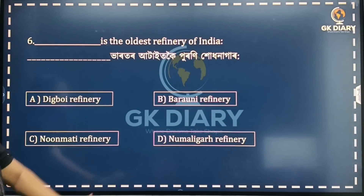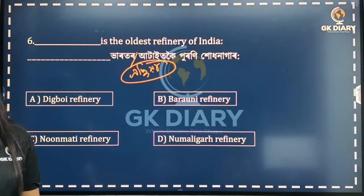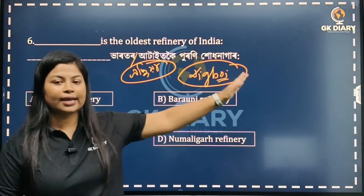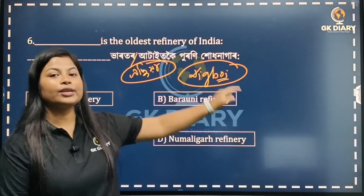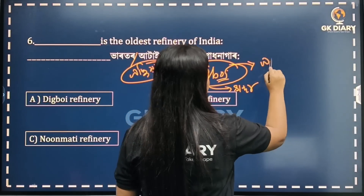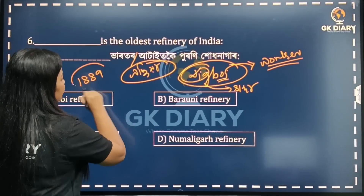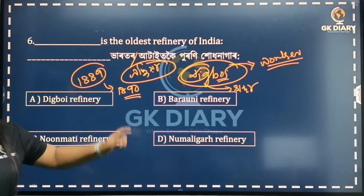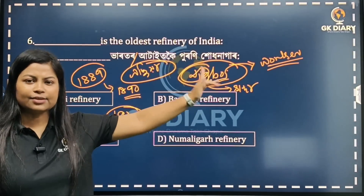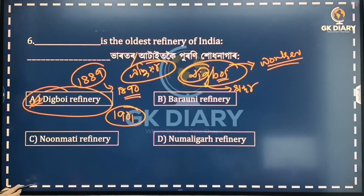Next question: The oil refinery — Digboi. So we can see Digboi is a big deal. The name Digboi — 'Dig' relates to digging, and workers were British as well. The oil was discovered in 1889 and the refinery was established in 1901. The correct option is Option A.